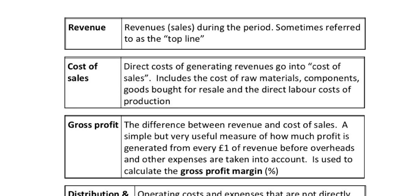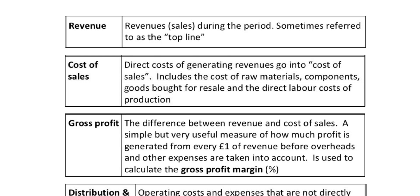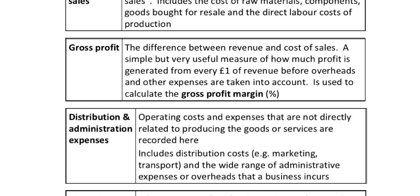Here is some generic theory based on finance. Revenue refers to sales during the period — sometimes called the top line — meaning the income from sales; it doesn't consider any costs. Cost of sales is the direct cost of generating revenues, including the cost of raw materials, component goods bought for resale, and direct labour cost of production — these directly relate to producing the goods. Gross profit is the difference between revenue and cost of sales, a simple but useful measure of how much profit is generated from every £1 of revenue before overheads. It relates to contribution — how much the sale of output contributes towards paying off expenses. The gross profit margin formula is: gross profit divided by sales revenue, multiplied by 100.